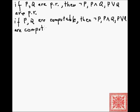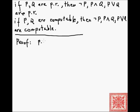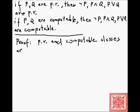The proof is essentially a one-liner: both the class of primitive recursive functions and the class of computable functions are primitive recursively closed classes. So PR and computable classes of functions are primitive recursively closed (PRC).